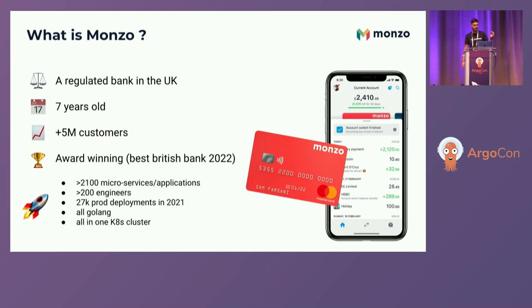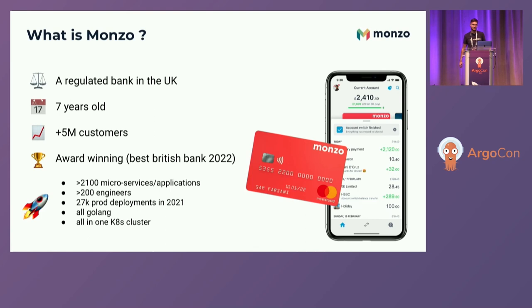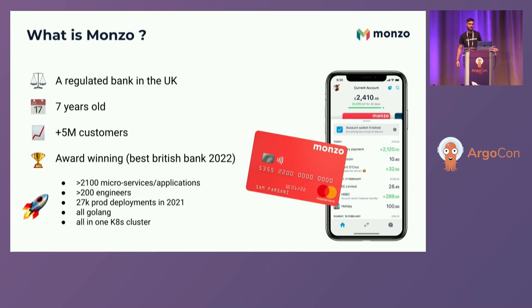From the tech point of view, Monzo really bought into the microservices philosophy. We have more than 2,100 microservices. We have over 200 engineers, most of them backend. We did last year 27,000 prod deployments — actual code pushed to production, not config changes. Everything is Golang, and everything is running in one mega Kubernetes cluster of about 300 nodes, 20,000 pods — massive scale.